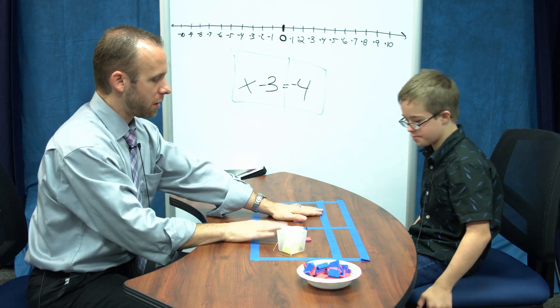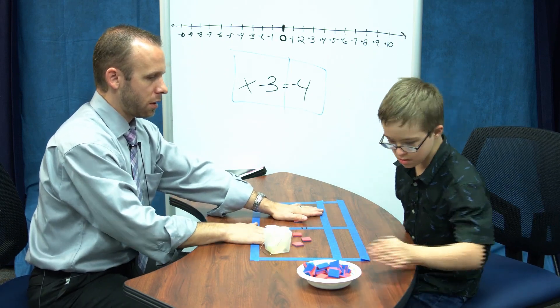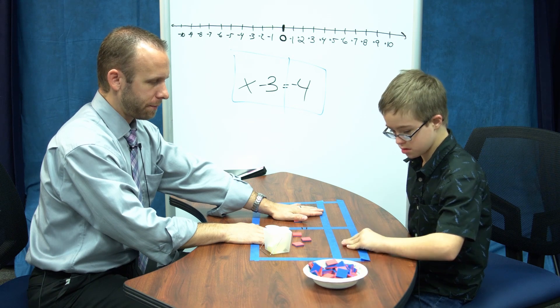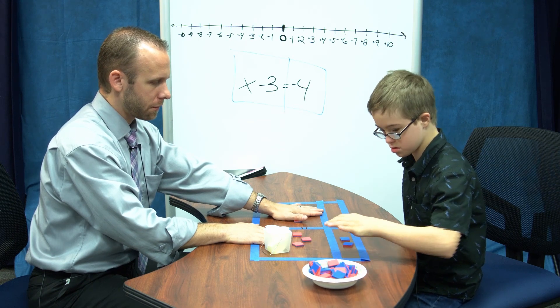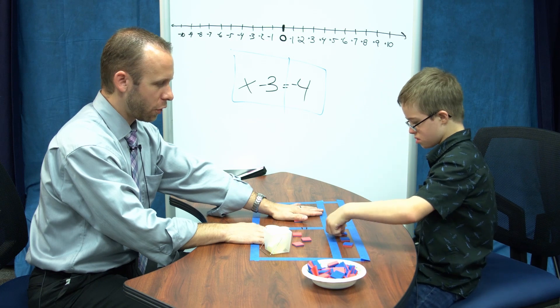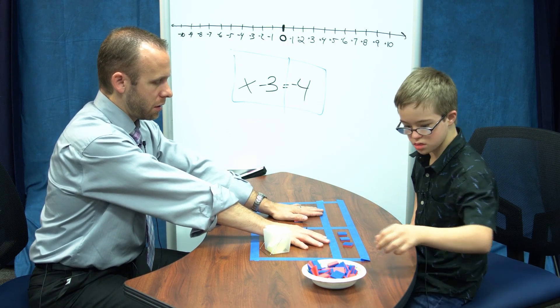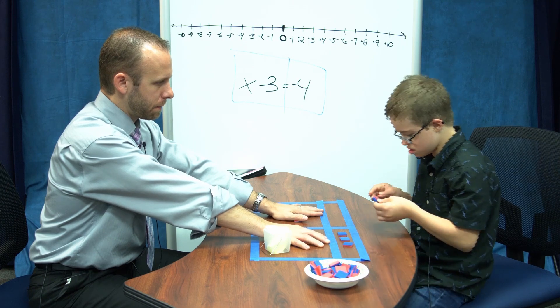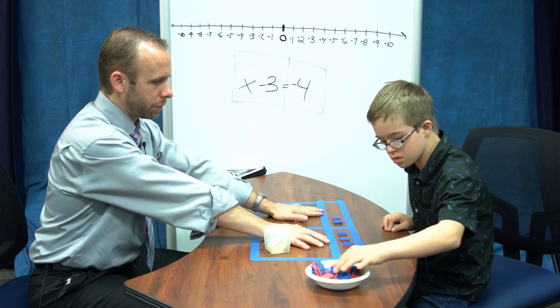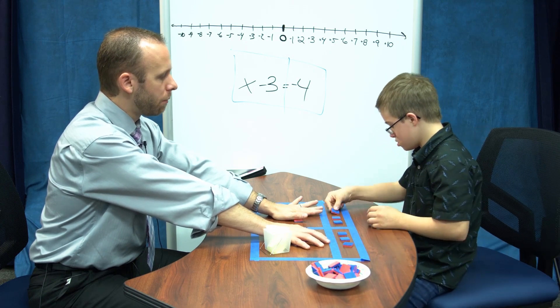How many zero pairs do you need? Go ahead and do it. Good. Now, how do we keep this balanced, the equation?